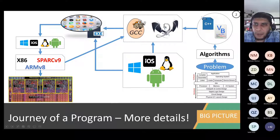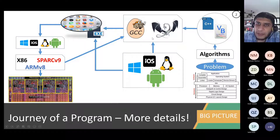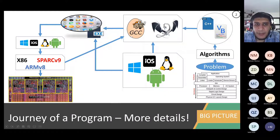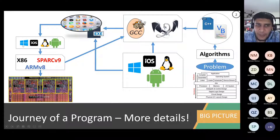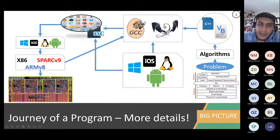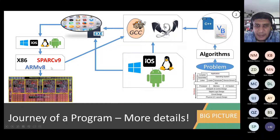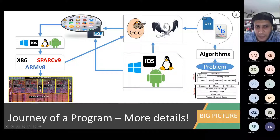Then you code the algorithm in some programming language — C, C++, Java, Python, whatever it is. That's software development. It gets compiled using a compiler like LLVM or GCC, generating an executable. That executable runs on top of an operating system — Windows, iOS, Linux, or Android, which is a Linux variation — and then gets translated into the ISA, the contract.